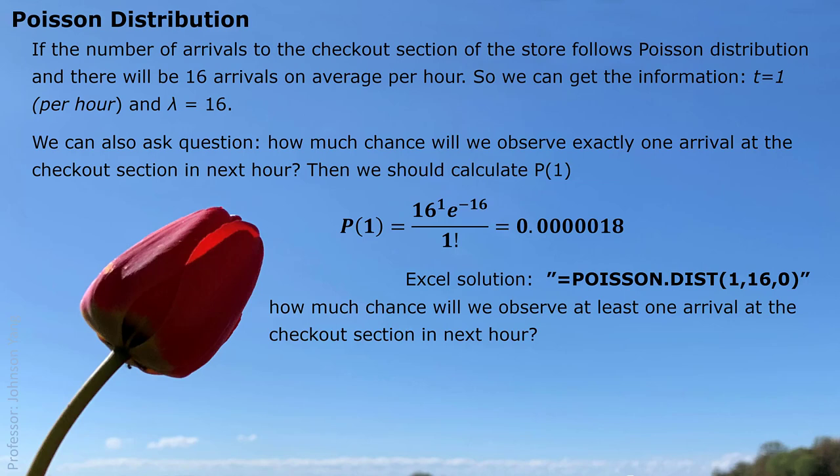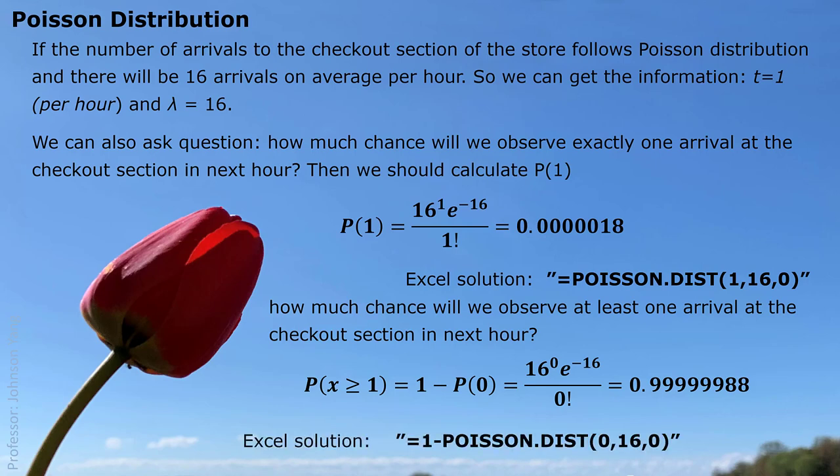If we ask how much chance we may observe at least one arrival at the checkout section in next hour. At least one is an inclusive situation. Maybe one, maybe two, maybe three, maybe any other number bigger than one. At least one means we are looking for probability x is one or bigger. The only case being left out is zero. We can simply use one minus probability zero. We can get this answer and we can have Excel solution as well. x being replaced zero, but we use one minus this to get the answer.